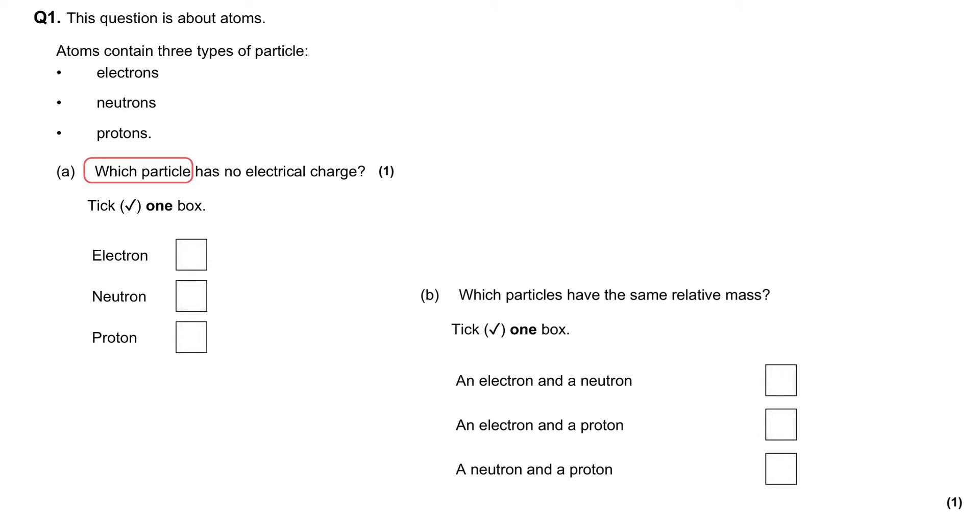Which particle has no electrical charge? Well, in an atom, the three types of particle are found in two different places. There is the center of the atom, which is called the nucleus.